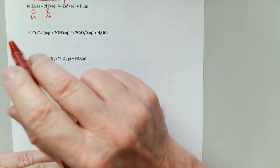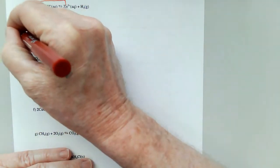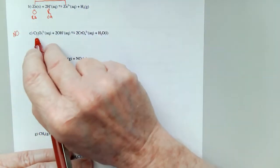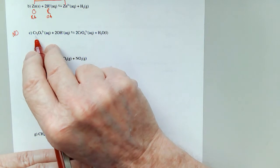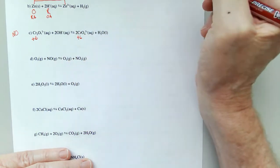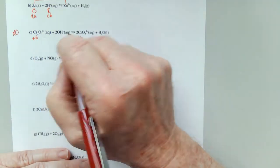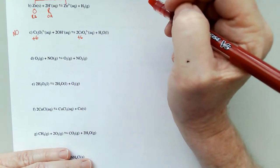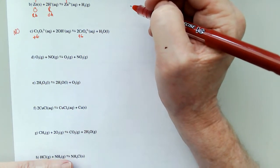Now, this is a tricky one. This actually is going to turn out to not be a redox. The chromium here, it turns out, is a plus six, and the chromium here is a plus six, so there's no change in that. The oxygens aren't changing, and the hydrogens aren't changing, so that means no redox is happening.